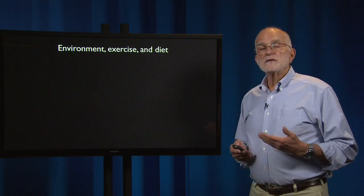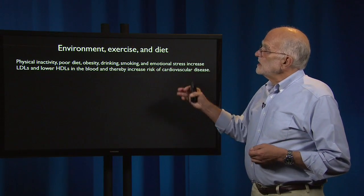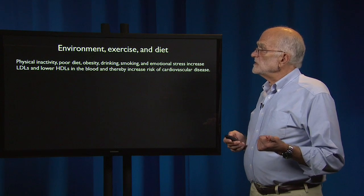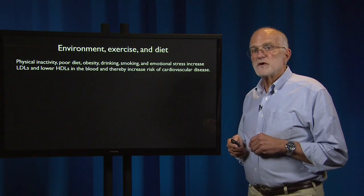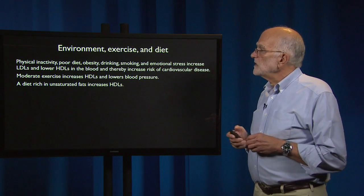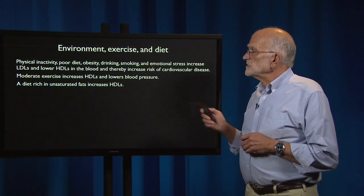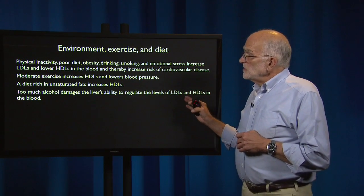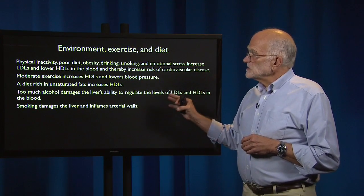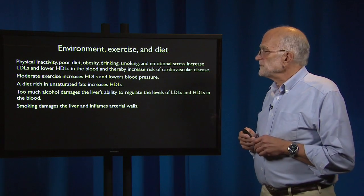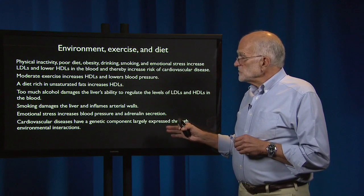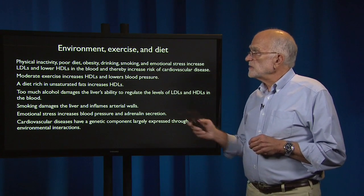Environment, exercise, and diet can all ameliorate these issues. Physical inactivity, a poor diet, obesity, drinking, smoking, and emotional stress increase LDLs and lower HDLs in the blood, thereby increasing the risk of cardiovascular disease. Moderate exercise increases high density lipoproteins and lowers blood pressure. A diet rich in unsaturated fats also increases high density lipoproteins. Too much alcohol damages the liver's ability to regulate lipoprotein levels, and smoking damages the liver and inflames arterial walls. Emotional stress increases blood pressure and adrenaline secretion. Cardiovascular diseases also have a genetic component largely expressed through these environmental interactions.